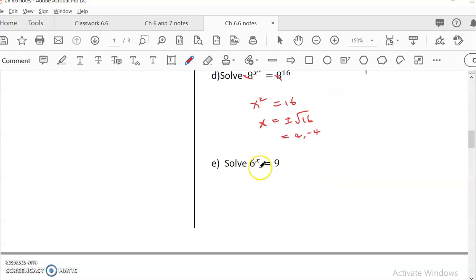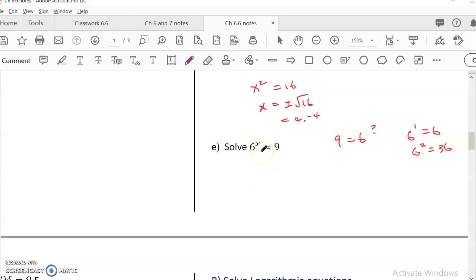The last one. Solve 6 to the x equal to 9. Can I write 9 as 6 to the something? I don't think so because 6 to the 1 is 6, 6 squared is already 36. There's nothing in between. So this is the case where you cannot write the other side as the same base of the first side or the left hand side. So you would apply ln on both sides. So it's very strange. When we solve equation in the past, we get rid of stuff. We root it or we subtract or we divide. But now when we solve exponential equation, we actually add stuff.